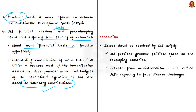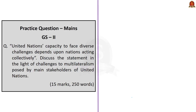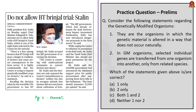As a conclusion, the author wants these issues resolved because the United Nations provides greater political space to developing countries to put forward their problems. If countries retreat from multilateralism, it will reduce the UN's capacity to face diverse challenges in both the pandemic and the post-pandemic world.